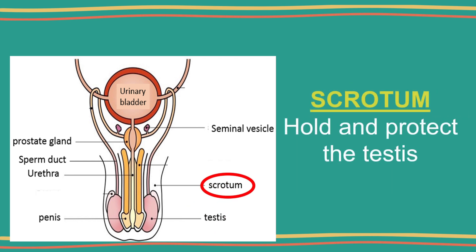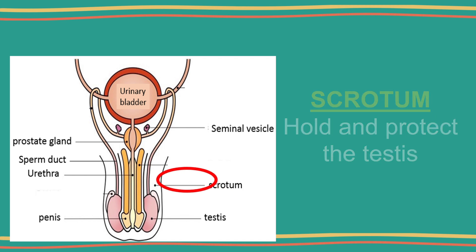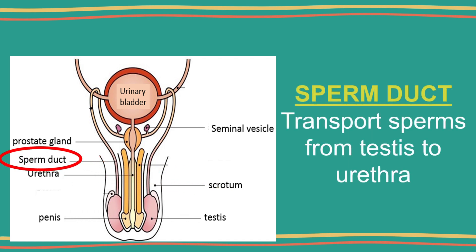The scrotum is a sack of skin to enclose and protect the testes. The testes in the scrotum hang outside the male's body to maintain a temperature slightly 2 degrees Celsius lower than the body temperature, which is essential for the production of healthy sperms.